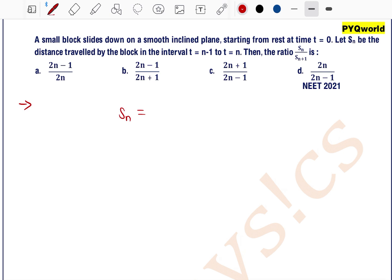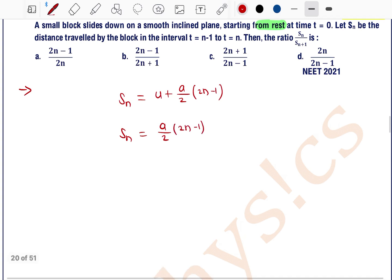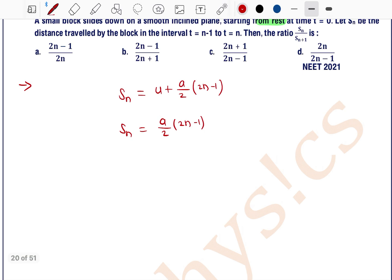We know that the distance travelled by the block in the nth second can be written as Sn equals u plus a by 2 into 2n minus 1. As it is given that the block started from rest, we can say u equals 0. So distance travelled is equal to a by 2 into 2n minus 1.